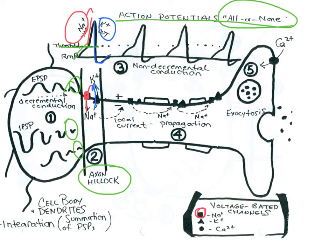Following that, potassium then moves out of the cell and the cell will repolarize and actually hyperpolarize. There is more detail about those voltage-gated sodium and potassium channels — the inactivation gate and the activation gate of the sodium channel — but I'm not going to get into that here. All we need to know is that the graded potential brings it to threshold, sodium coming in is the depolarizing upstroke of the action potential, and potassium going out is the repolarizing and hyperpolarizing phase.